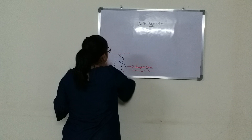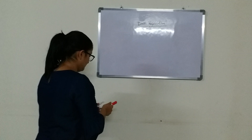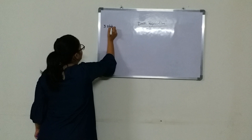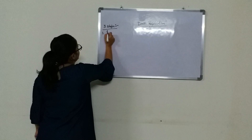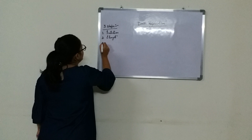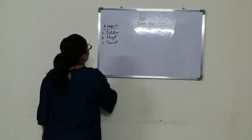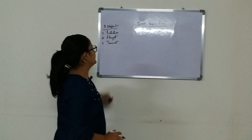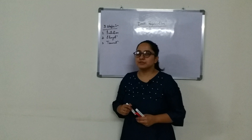There are three steps involved in DNA replication: first is initiation, second is elongation, and third is termination. In this video I'll be particularly talking about the initiation of DNA replication. As I mentioned, DNA replication is a semi-conservative replication.